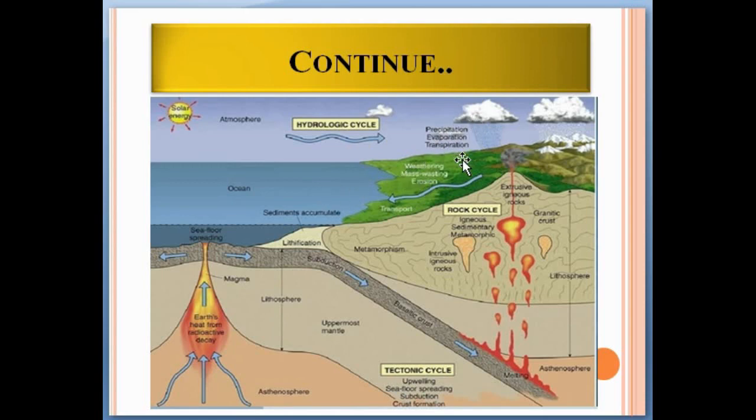Due to the transportation, weathering and mass wasting erosion occurs, and finally the weathered rock and other material is deposited into the basin or ocean.